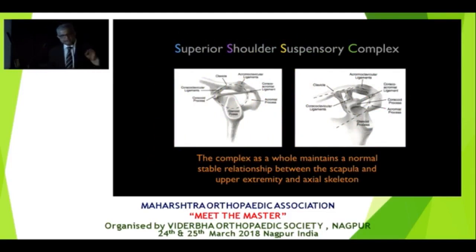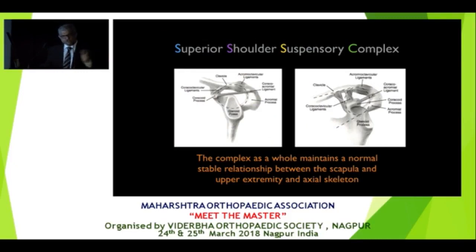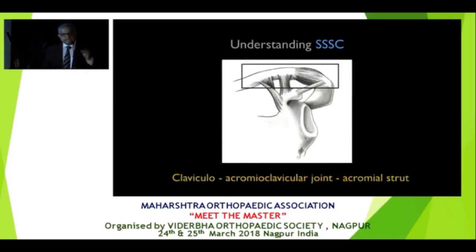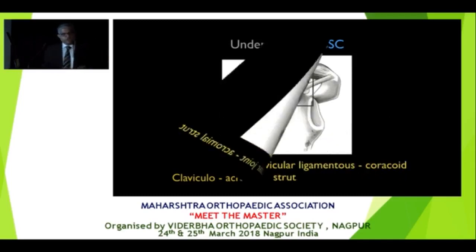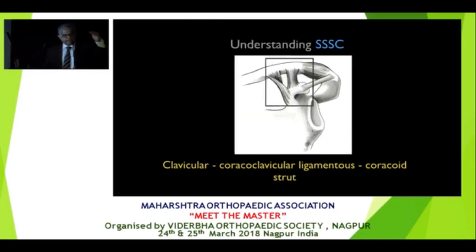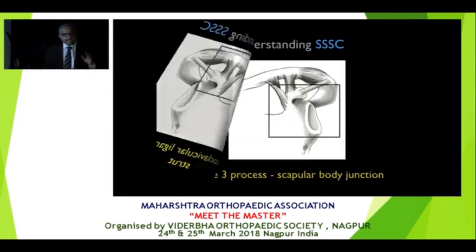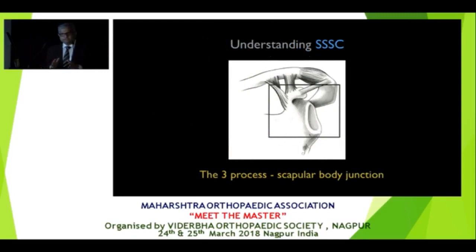Whenever you see a patient like this, direct your attention to the superior suspensory complex. The SSC basically maintains a normal relationship of the scapula and the upper extremity which allows good movement. What comprises it? There are three components: the clavicular-acromioclavicular-acromial strut, the clavicle-coracoclavicular-coracoid strut, and the confluence of the three processes at the articular margin.